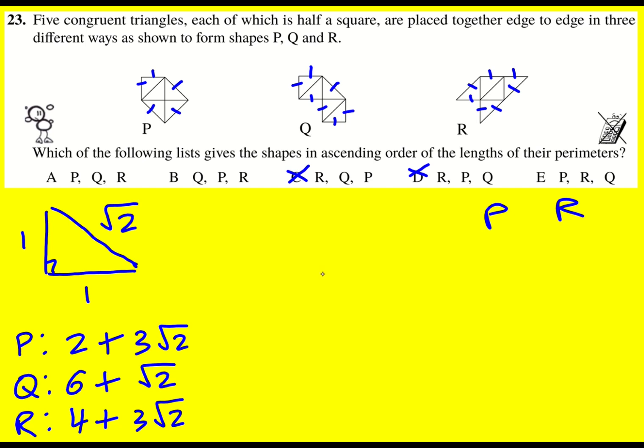So maybe I start with P and Q. So that's my order up there, P and Q. Okay, so I've got 2 + 3√2 and I've got 6 + √2, and I want to compare these. So I'm going to take away two from both because then they're just changing in the same way. Then I'm comparing 3√2 with 4 + √2. And if I take √2 away from both, I've got 2√2 and I've got 4.